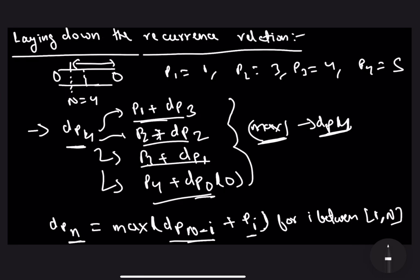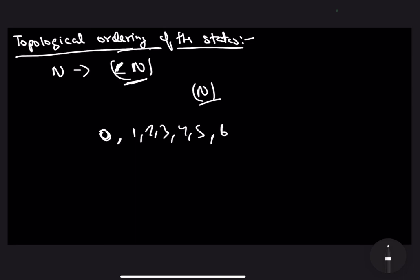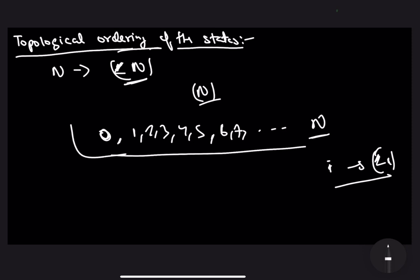The last step in solving a DP problem is laying down the topological ordering for the states. From the recurrence relation, DP[N] depends on DP[N - i] for all i from 1 to N, meaning before solving the Nth state we must have already solved all states less than N. So the correct topological order is: set the base case DP[0] = 0, then iterate over all states from 1 to N in increasing order, since the ith state depends on all states less than i.